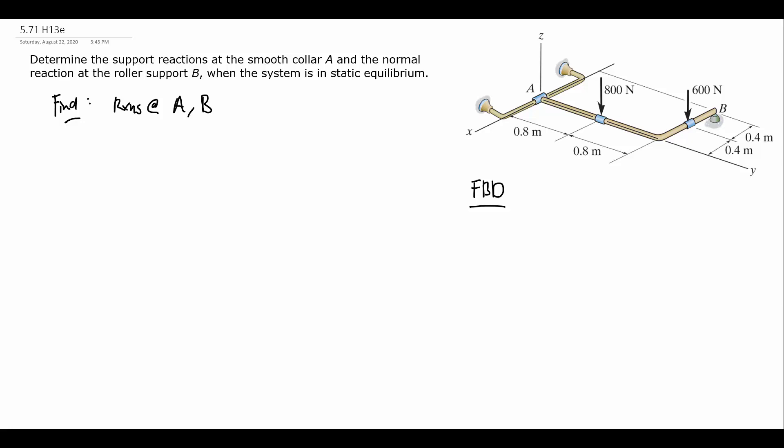The first thing we need to do is choose our object of interest — what are we going to isolate from its supports? We want the reactions at A and B, so we need to keep the object that goes from A to B. The roller is not going to be part of my free body diagram, so I can see what the roller does to my object. I'm also not including the pipe support that goes through the collar, so I can see what that does to the collar at A.